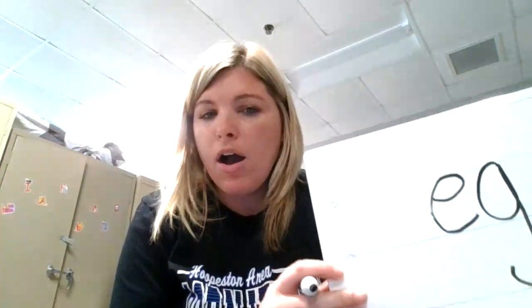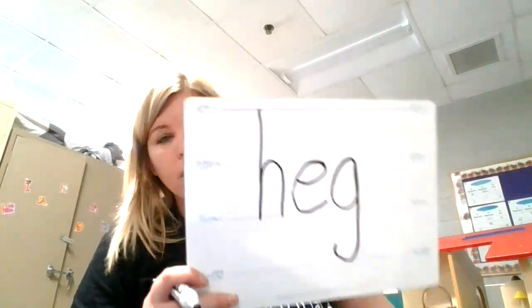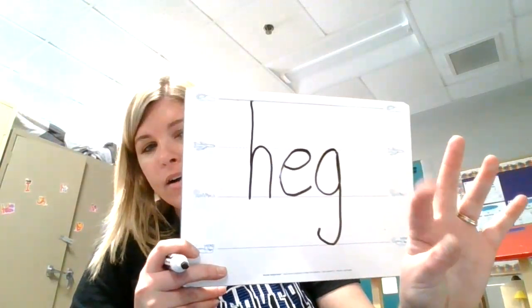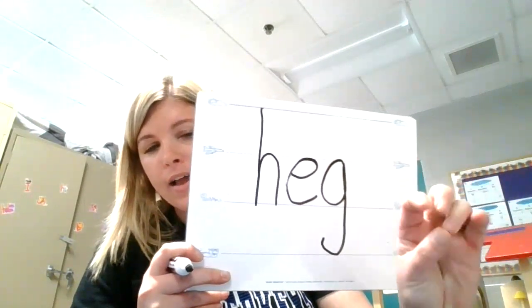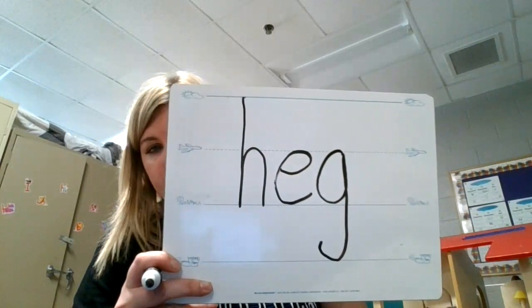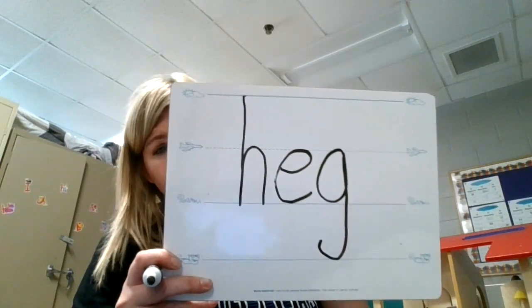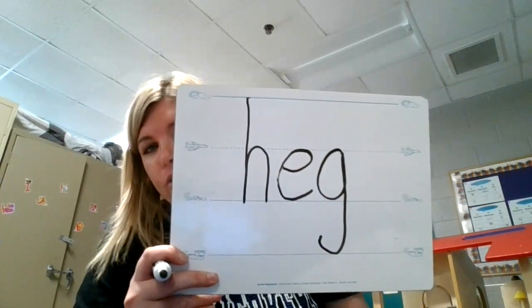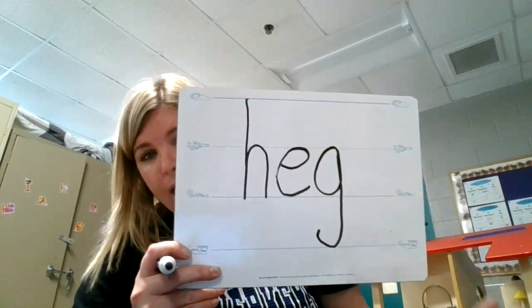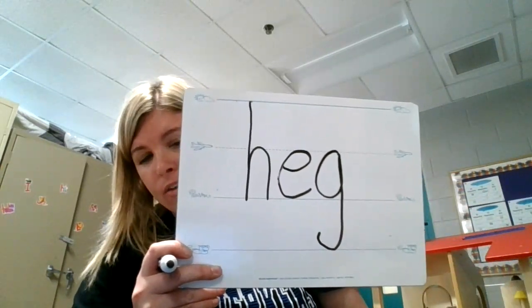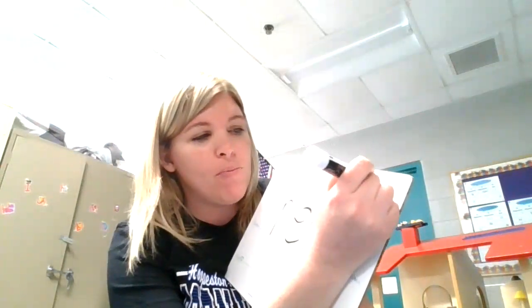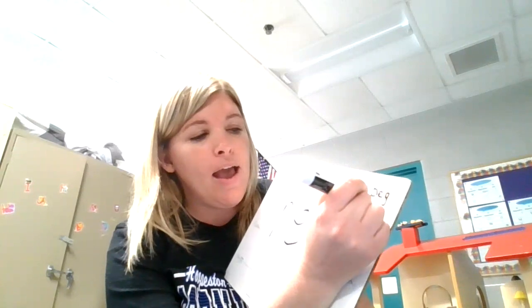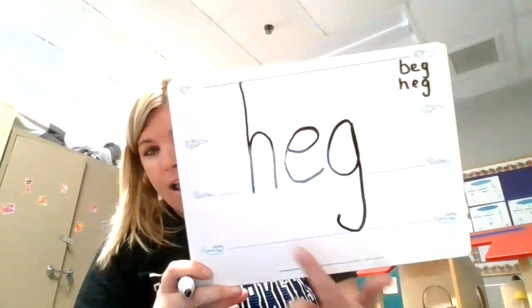Now we're going to erase B and put in the letter H. Let's tap our word — H-egg, H-egg. Can you use the word heg in a sentence? That's tricky. We can't use the word heg in a sentence — it doesn't exist, so that would be a nonsense word. It's still part of the egg family, but it is not a real word. Up here in the corner I'm going to write our words we've made: beg and heg. It still rhymes, it's just not a word that we use in English.